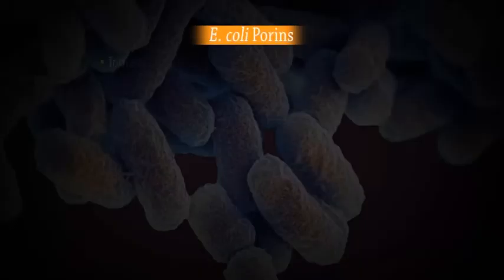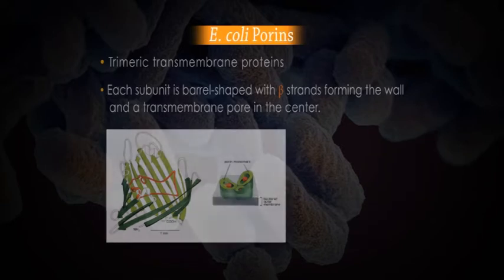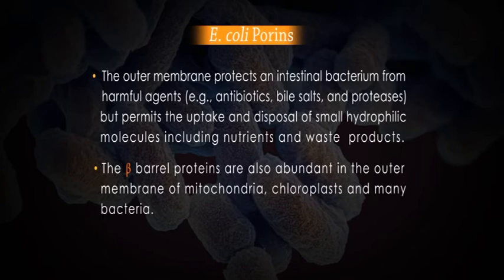The porins are a class of transmembrane proteins whose structure differs radically from that of other integral proteins. Several types of porins are found in the outer membrane of gram-negative bacteria such as E. coli. They are trimeric transmembrane proteins. Each subunit is barrel-shaped with beta strands forming the wall and a transmembrane pore in the centre. The outer membrane protects an intestinal bacterium from harmful agents like antibiotics, bile salts and proteases, but permits the uptake and disposal of small hydrophilic molecules including nutrients and waste products. The beta barrel proteins are also abundant in the outer membrane of mitochondria, chloroplasts and many bacteria.